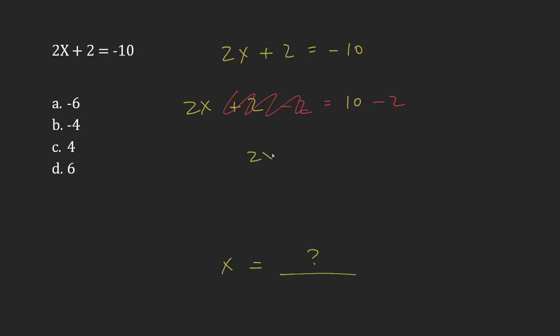Leaving me just with 2x, and then 10 minus 2 is going to be 8. And now what's happening is I have 2x equals 8. I'm multiplying x, so if I divide by 2 that will undo the multiplication.